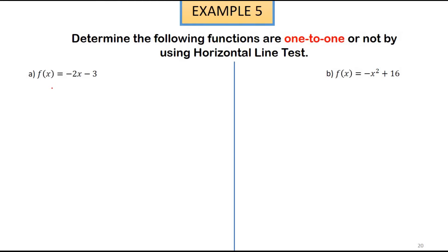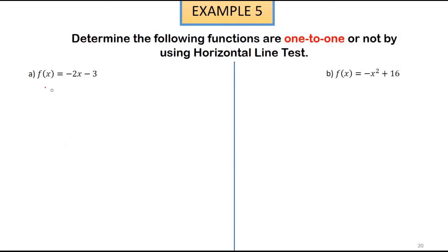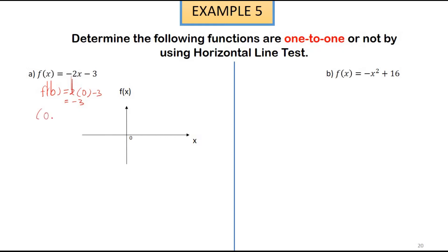Let's say we take x = 0, meaning we need to find f(0). So f(0) = -2(0) - 3 = -3. From this we get one point, which is (0, -3).